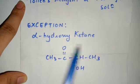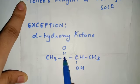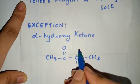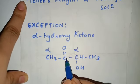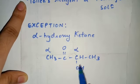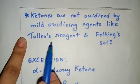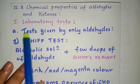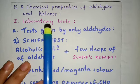To make things clearer: an alpha hydroxy ketone has a ketone group (C=O), and on the adjacent alpha carbon there is a hydroxy group. This compound is capable of being oxidized by a mild oxidizing agent like Tollen's reagent and Fehling solution — so this is an exception. With this we are done with the tests given only by aldehydes. The next part and further properties will be covered in the next video. Thank you.